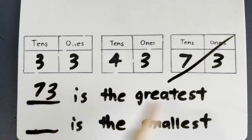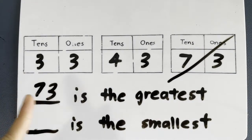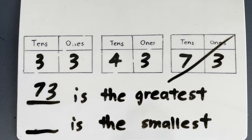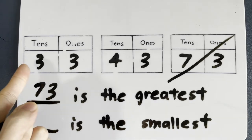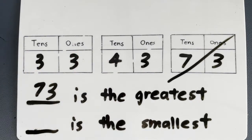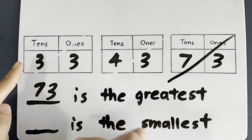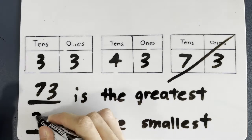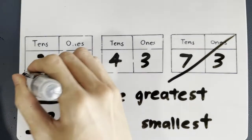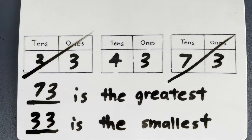We cancel that off and write it over here — 73 is the greatest. Now tell me, which is the smallest? Look at 3 and look at 4. Which is the smallest, 3 or 4? Don't look at the ones. It's 3. So 33 is the smallest, and we cancel that out. All right, we are done with this question. Let's move on.